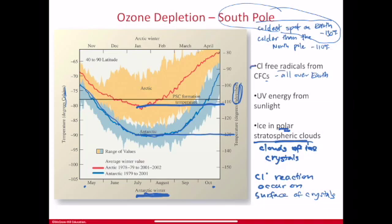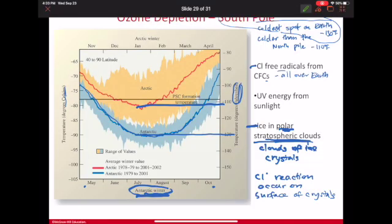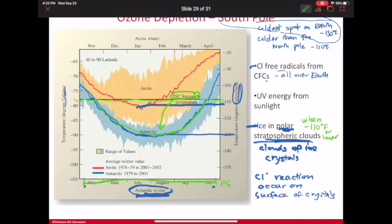We need those chlorine free radicals, which are present all over Earth. But we don't have clouds made out of ice all over Earth — only in this coldest spot. Furthermore, those polar stratospheric clouds are not around all year round; they only form during the coldest portions of the year, which is winter in Antarctica. From May through October, there are polar stratospheric clouds — PSCs — throughout the entire Antarctic winter.